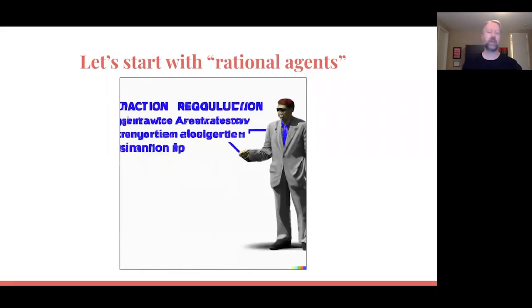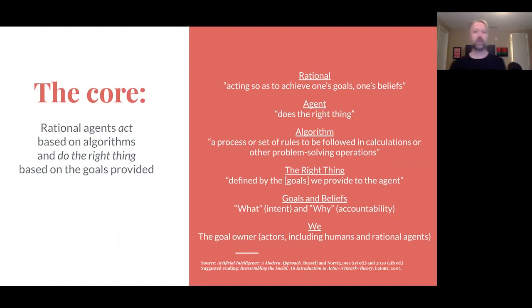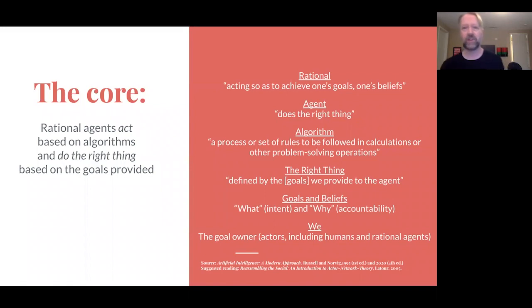You're going to see a couple of generative AI art objects in this presentation. This is what I got back from DALL-E when I asked it for a rational agent. If anyone's seen the movie Buckaroo Banzai, this kind of reminds me of one of the aliens. Here's a really dense slide, but I made this on purpose because I want to get it all into one spot. Rational agents have a pretty simple definition on the face of it: they act based on algorithms, and they do the right thing based on the goals provided.